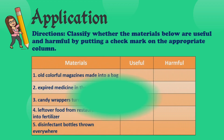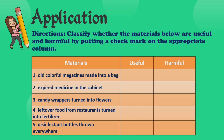Number one: colorful magazines made into a bag. Number two: expired medicine in the cabinet. Number three: candy wrappers turned into flowers. Number four: leftover food from restaurants turned into fertilizer. And number five: disinfectant bottles thrown everywhere. You have 20 seconds to answer all five questions. Your timer starts now!